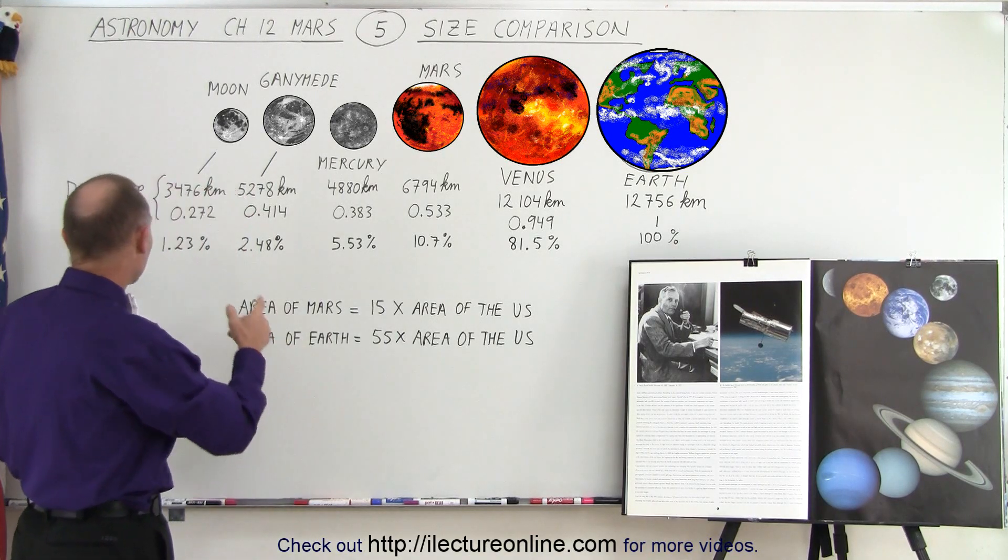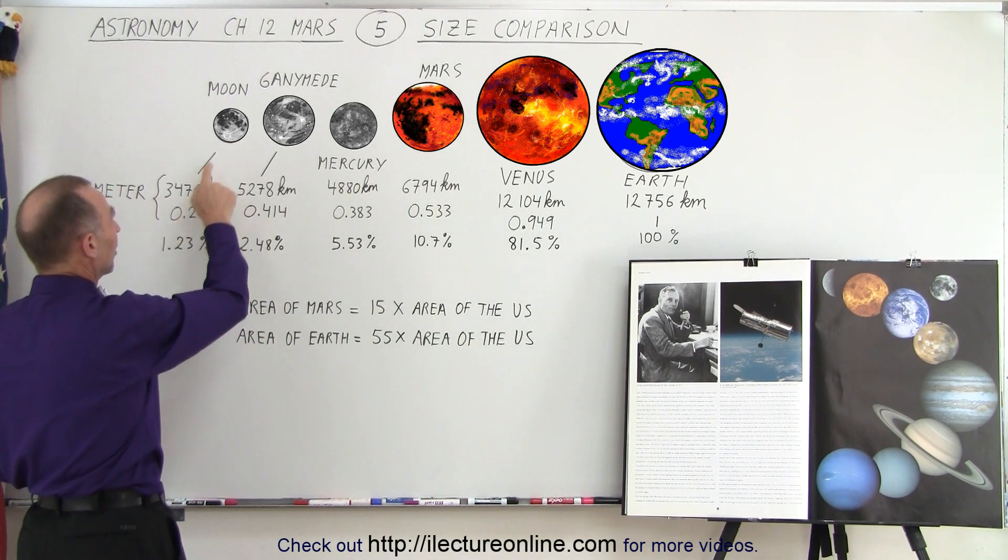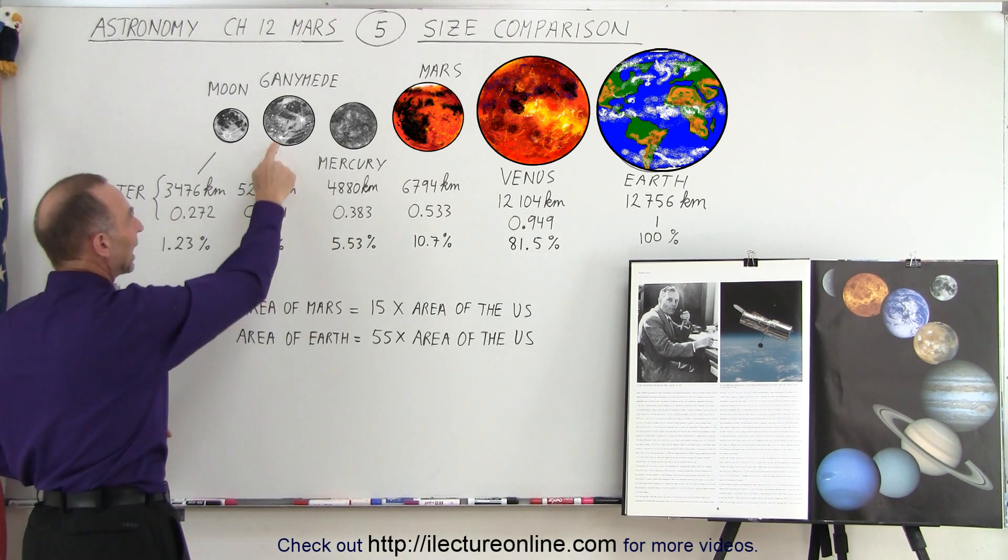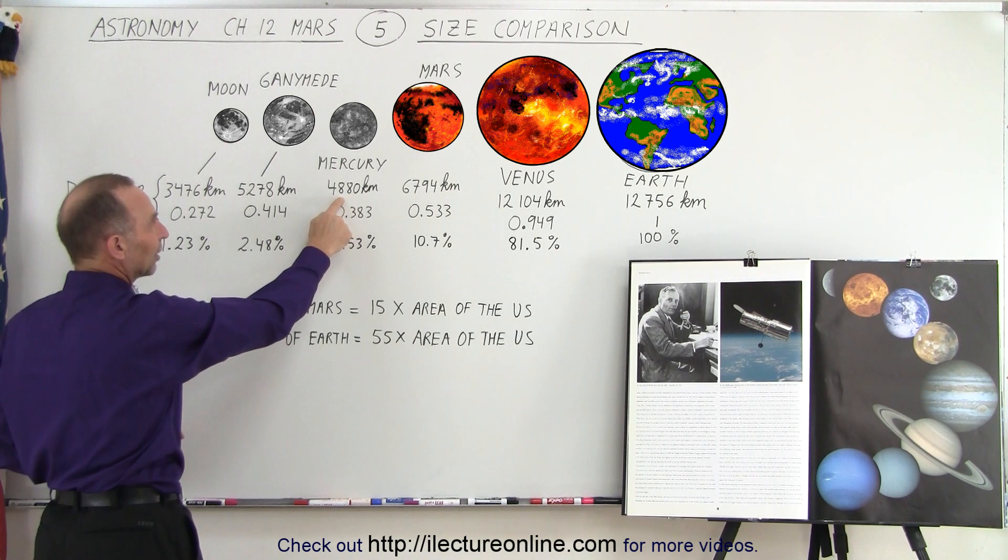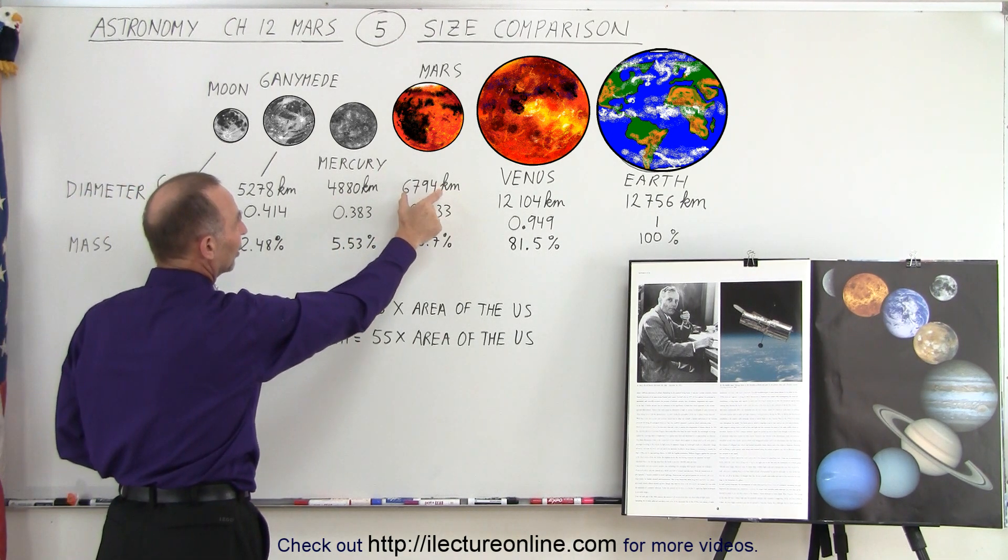Size-wise we can say the diameter can be compared to the moons. Here we have the diameter of our moon, 3,476 kilometers. The diameter of the largest moon Ganymede, then Mercury, 4,880 kilometers. And then we have Mars, which is almost 7,000 kilometers.